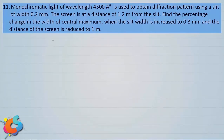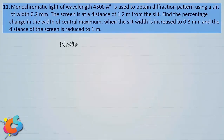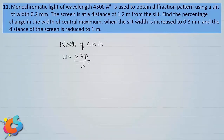The width of the central maximum is given by: W = 2λD / d. This is the distance between the two first minima on either side of the central maximum.